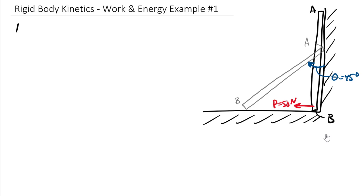Let's outline the terms. We have a 0.8 meter long and the mass is 10 kilograms. We're going to say this is a slender rod.